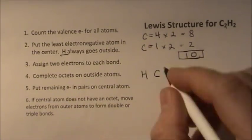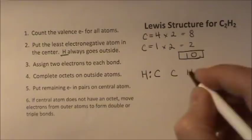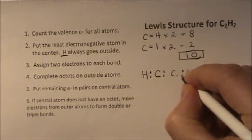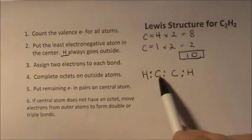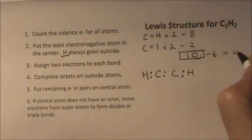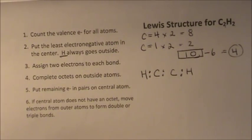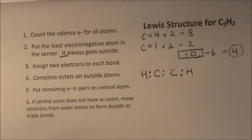Assign two electrons to each bond. Let's put two here. Let's put two here. Two here. So we've used 2, 4, 6. So we've only got four valence electrons left to work with. So we've assigned two electrons to each bond.